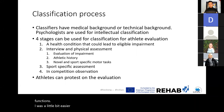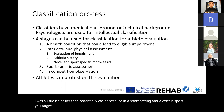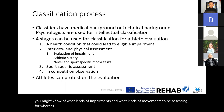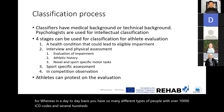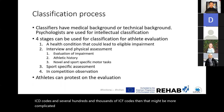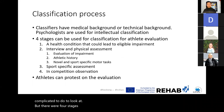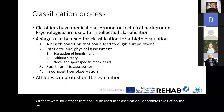In a sport setting it may be somewhat easier because you might know what kinds of impairments and movements to assess for. In a day-to-day basis you have over 10,000 ICD codes and hundreds to thousands of ICF codes, making it more complicated. There are four stages for athlete evaluation: the first is whether there is a health condition that could lead to an eligible impairment.